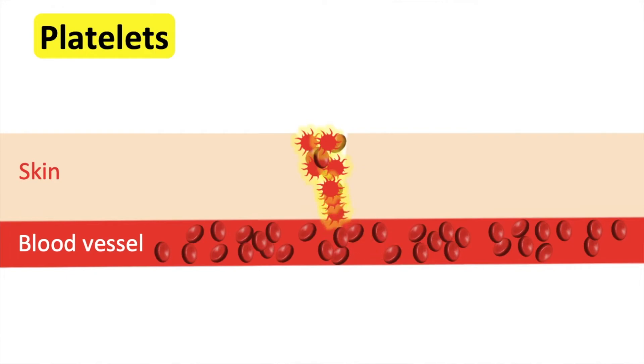To make this plug stronger, a protein called fibrin attaches itself to the platelets and red blood cells. This mesh then becomes sticky due to the exposure of outside chemicals.